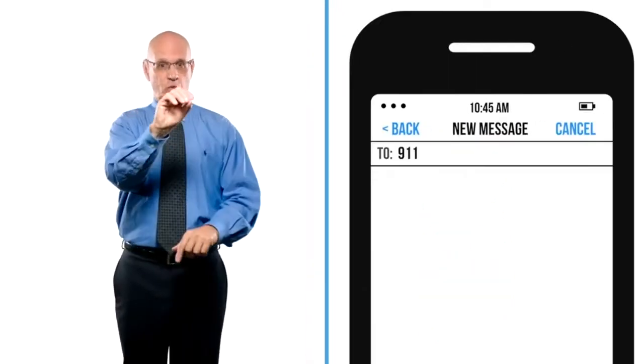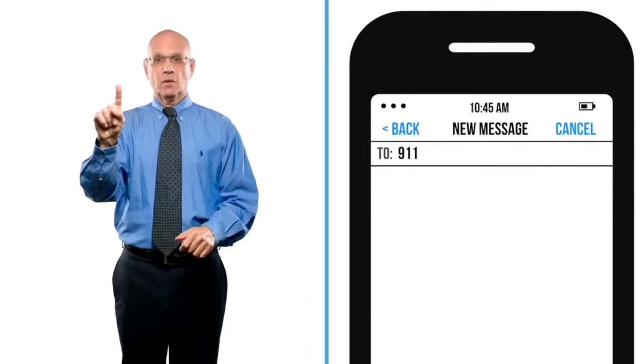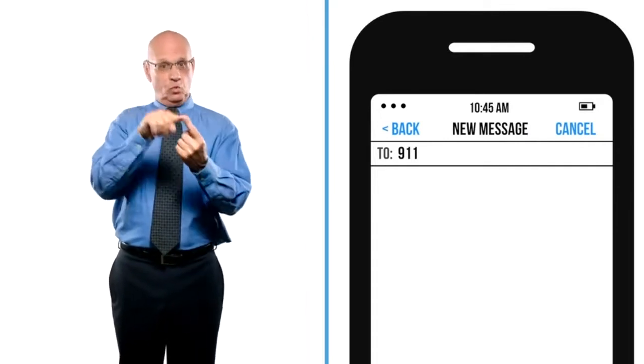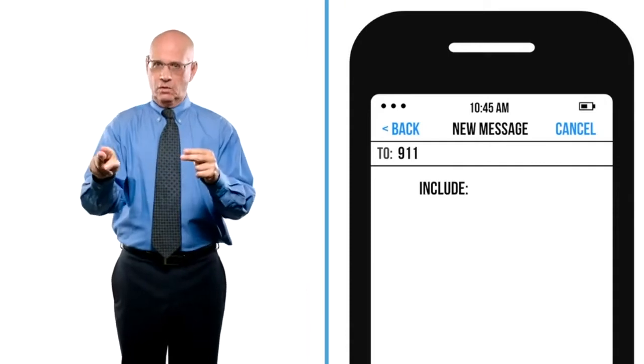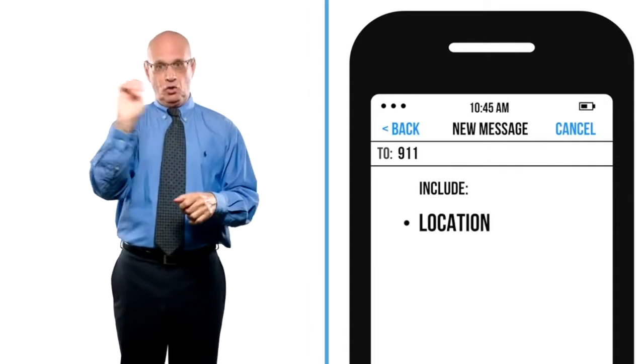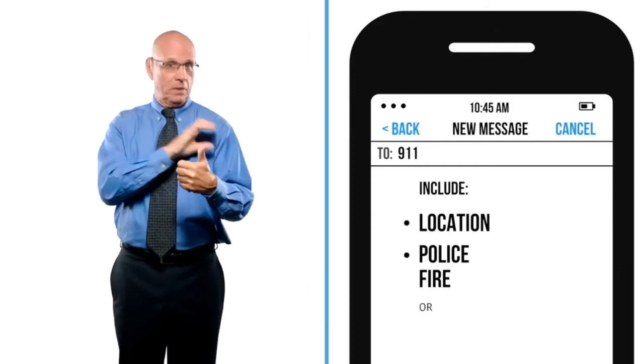Enter the numbers 9-1-1 in the To or Recipient field. The first text to 9-1-1 should be short, include the location of the emergency, and ask for police, fire, or ambulance.